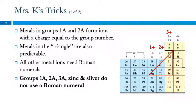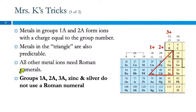Summary of the tricks: metals in Groups 1A and 2A form ions with the charge matching their group number. Metals in the 'triangle' (Groups 1A, 2A, 3A, zinc, and silver) are also predictable. All other metal ions need Roman numerals in their names. Groups 1A, 2A, 3A, zinc, and silver — no Roman numeral. Everything else — use a Roman numeral.